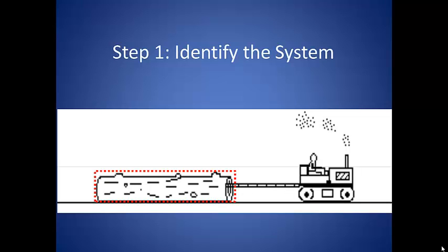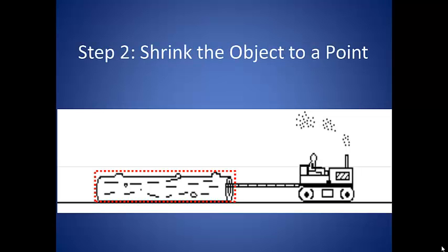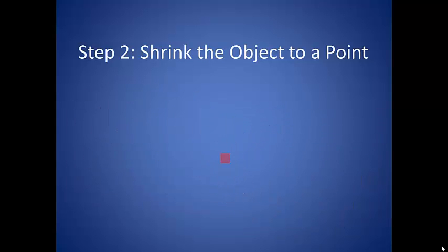Everything else is referred to as the surroundings, or the environment. The shape and size of the object is not important, so to keep our diagrams from becoming too cluttered, we are going to shrink it down to a point.